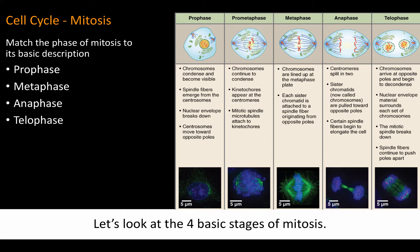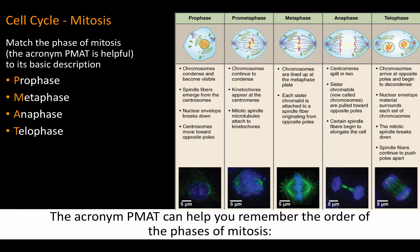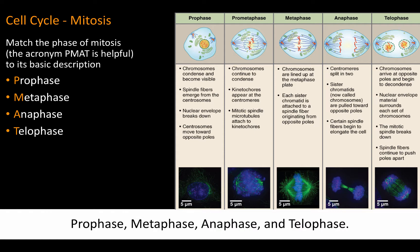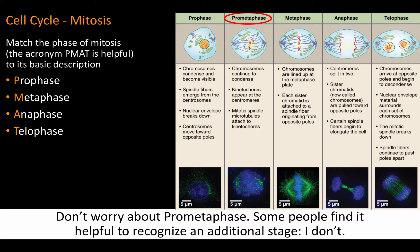Let's look at the four basic stages of mitosis. The acronym PMAT can help you remember the order of the phases of mitosis: prophase, metaphase, anaphase, and telophase. Don't worry about prometaphase — some people find it helpful to recognize an additional stage, but I don't.